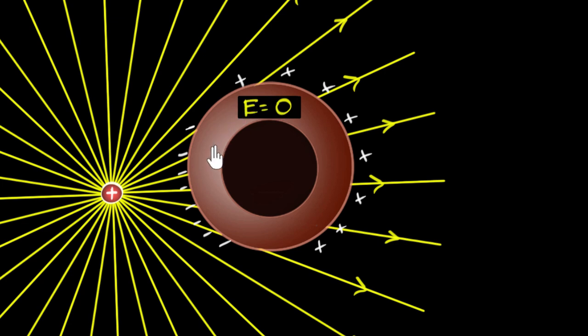Now think about this. Because electric field everywhere is zero, this means that our entire conductor must be an equipotential surface. Meaning that every single point on the surface or inside the surface, inside the conductor, should have the exact same potential.